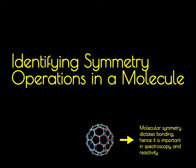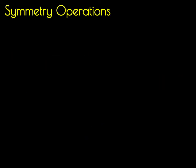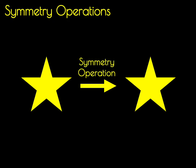In this video, we're going to identify the symmetry operations that can be found within a molecule. If you'll recall from the previous video, a symmetry operation is a geometric transformation that we can perform on an object that leaves it unchanged. For example, if I have a star and I tell you to turn around and then I perform a symmetry operation on that star, you would not be able to tell whether or not I had performed that symmetry operation because it looks identical to what I started with.